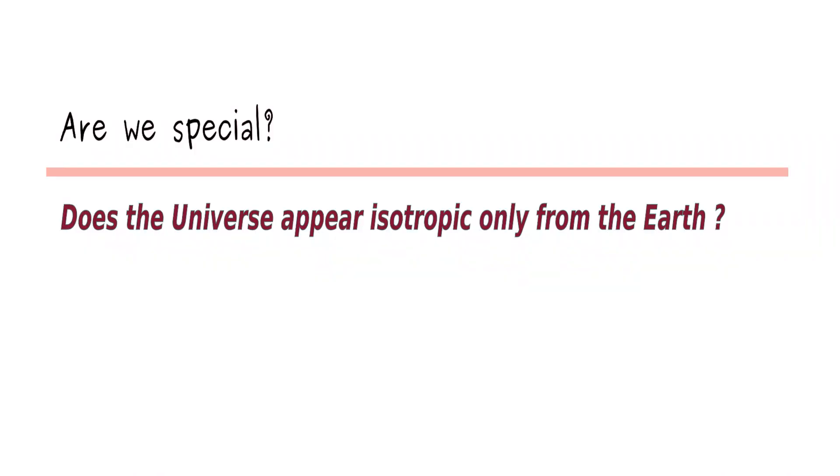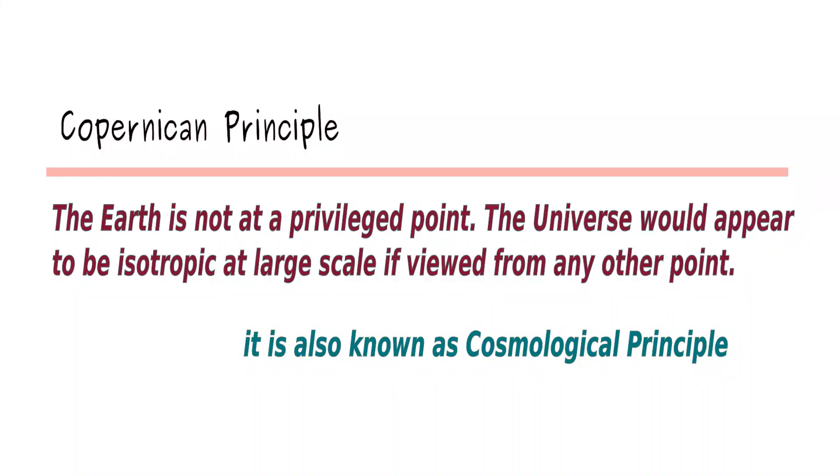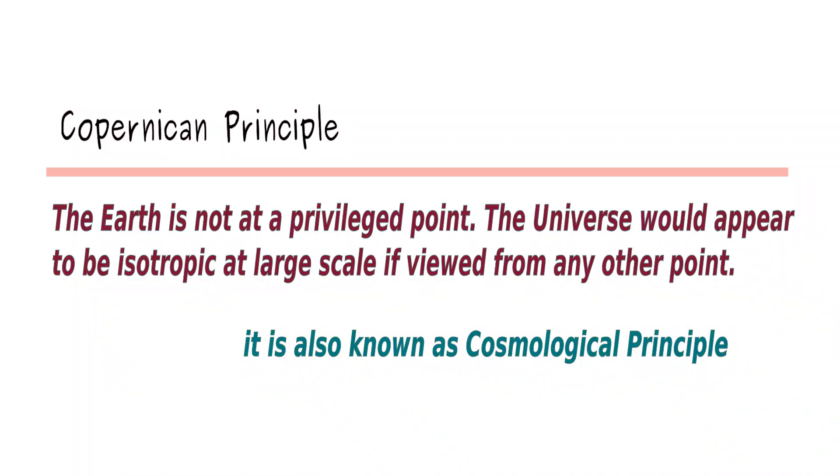One can then ask the question: whether we humans are the privileged observer? Is the universe isotropic only if you view it from the earth? We cannot settle this question using observations from the earth alone — we need to use some principle or axioms; in other words, we have to make some assumptions. In this context, the Copernican principle says that earth is not a privileged point, and the universe would appear to be isotropic at large scale if viewed from any other point in space. The observation from earth suggests that the universe is isotropic, and the Copernican principle says earth is not privileged. These two inferences together imply that the universe is both isotropic and homogeneous.